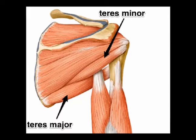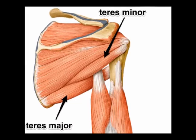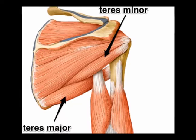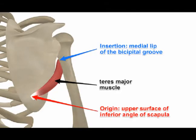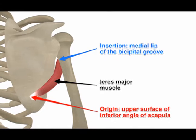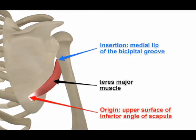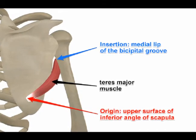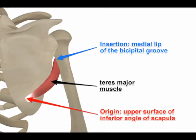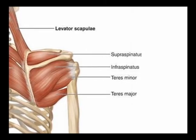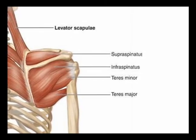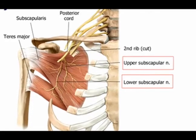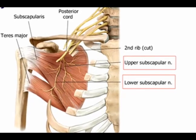The teres major muscle is an often overlooked muscle, so I'm going to go over the details so you understand exactly the origin, the insertion, the concentric action, and the innervation. The origin of the teres major muscle is the posterior surface of the inferior angle of the scapula. The insertion is the medial aspect of the intertubercular groove of the humerus. The concentric actions of the teres major are shoulder adduction and internal rotation. It is innervated by the lower scapular nerve from vertebral levels C5 and C6.